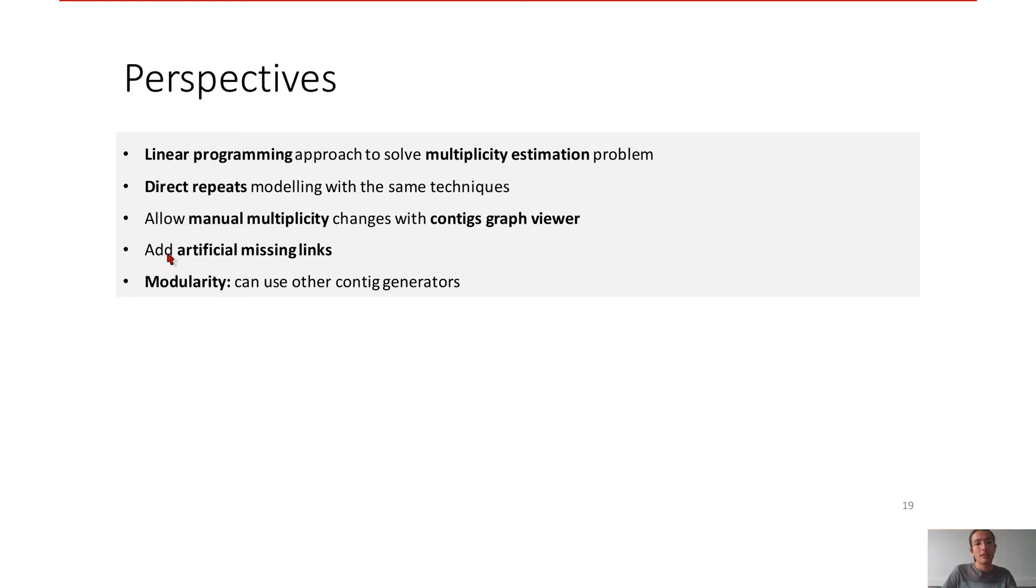We want to add artificial missing links until the LP problems were feasible. Then we want to do a modular workflow in order to user can use other contig generators. Thank you for listening.